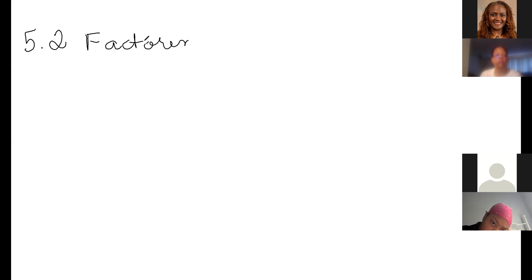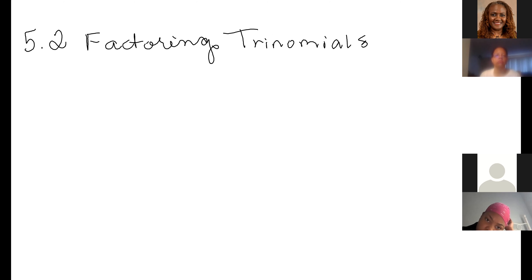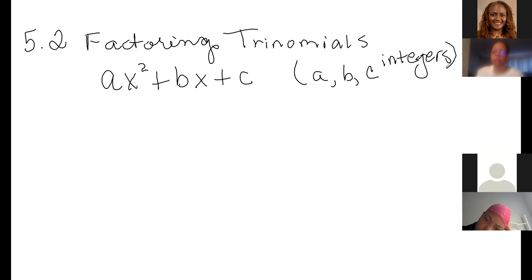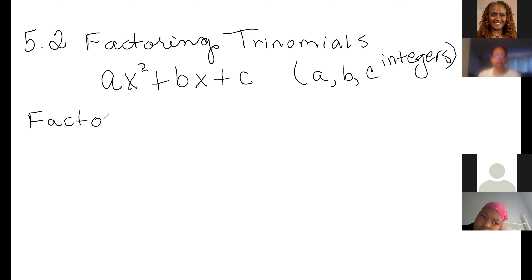Today we're going to be factoring trinomials. A trinomial is in the form AX² plus BX plus C, where A, B, and C are all integers. We talked about factoring the greatest common factor last time, but now we're going to be factoring these trinomials in this form.